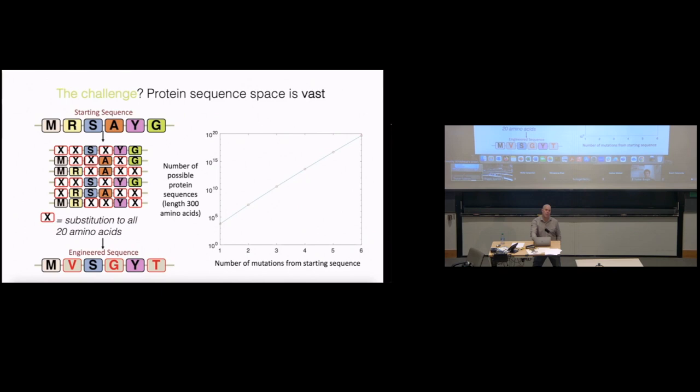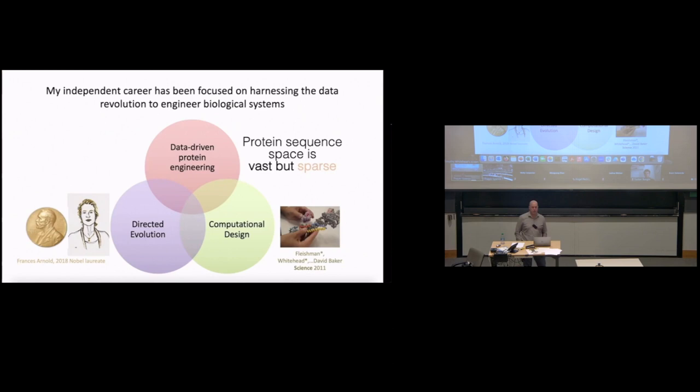The major challenge in this field is that the sequence space you can design around is completely astronomical. It's vast. What I'm plotting here on the y-axis are the number of possible protein sequences. You can conceptualize a protein sequence as a string of little alphabet letters. If you start to change them to different amino acids or different letters, the number of sequences you can get for very few mutations starts to outnumber the number of grains of sand on the earth. So it becomes very challenging just from a combinatorics perspective.